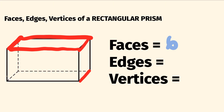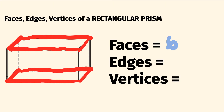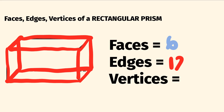On the bottom we have one, two, three, four. And joining the top and the bottom together, we have one, two, three, four edges. So all together, four plus four plus four, that is twelve edges.